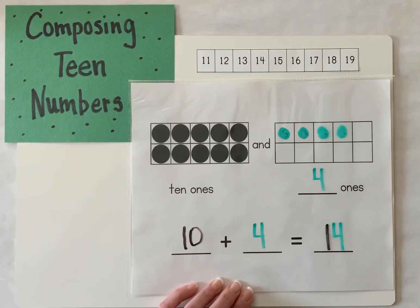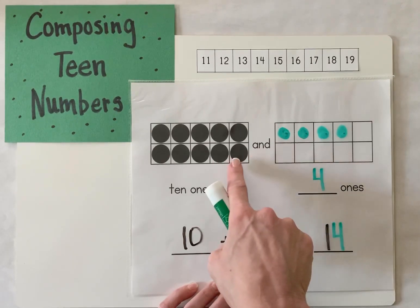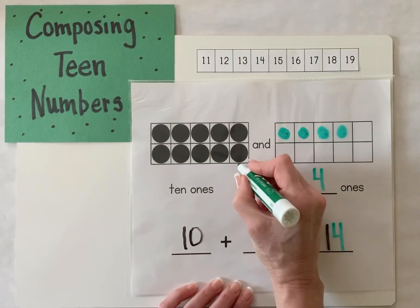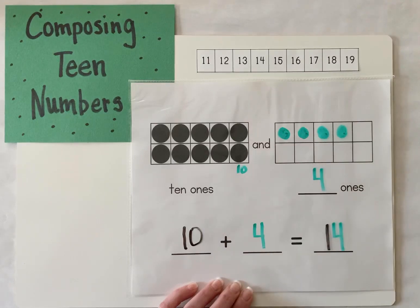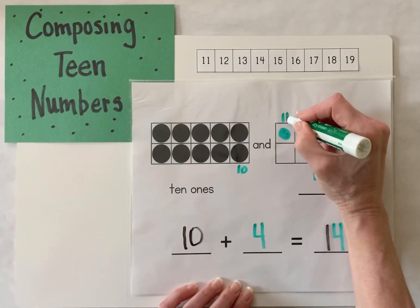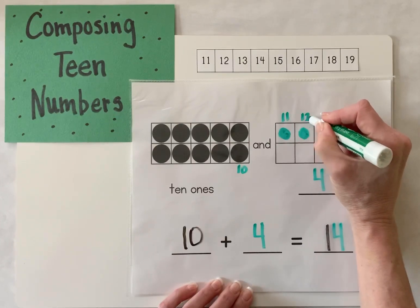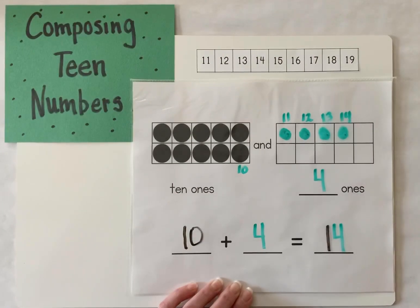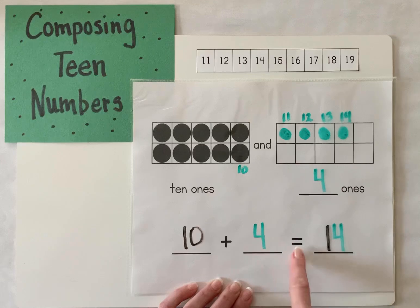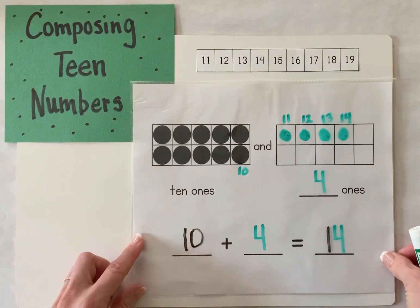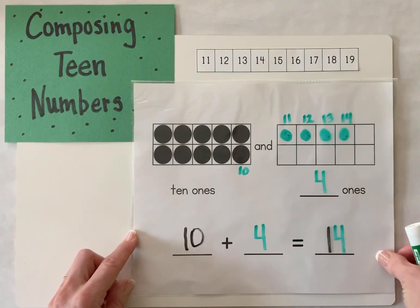Now I can check my work by using my 10 frames. This is 10 — so if I keep counting: 10, 11, 12, 13, 14. 10 plus 4 equals 14. And that's how we compose a teen number using 10 frames.